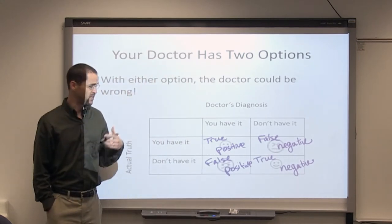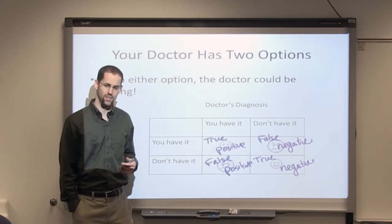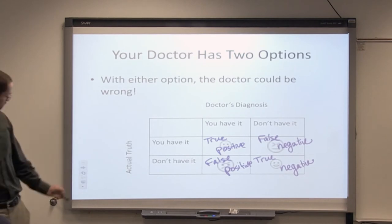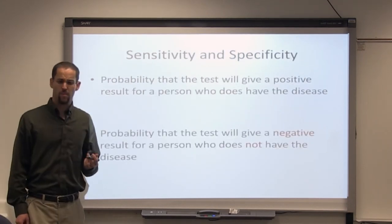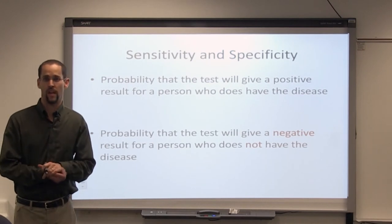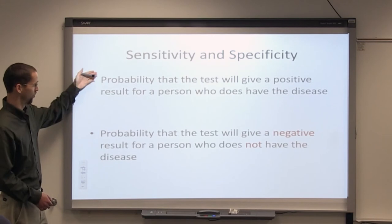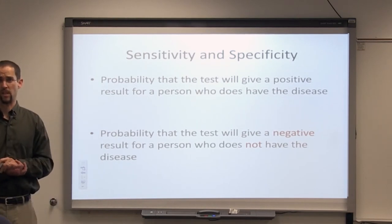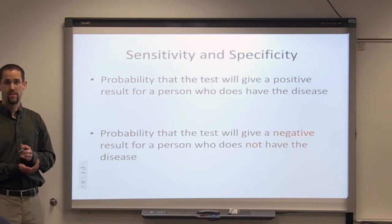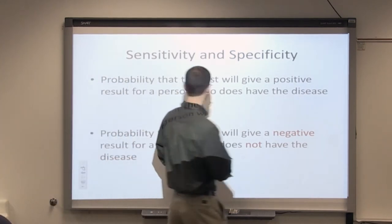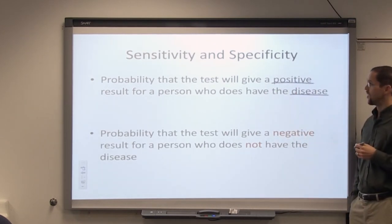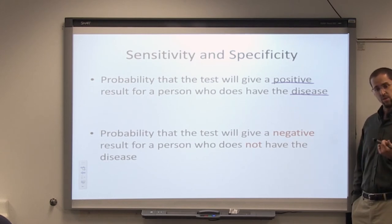We would hope a test would always have true positives or true negatives. That brings up two new terms related to probability: sensitivity and specificity. Sensitivity is the probability that the test will give a positive result for a person who does have the disease — a positive test result matched with actually having the disease. That's thinking about the true positives.